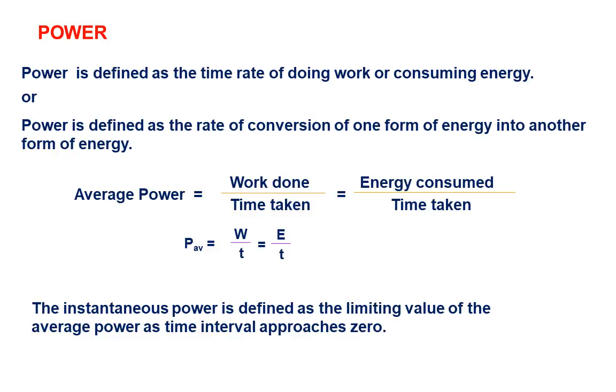Power is a scalar quantity because it is the ratio of two scalar quantities: work done and time. The dimensions for power will be the dimension of work done, that is ML²T⁻², divided by the dimensions of time, that is T. So ultimately, power has dimensions ML²T⁻³.